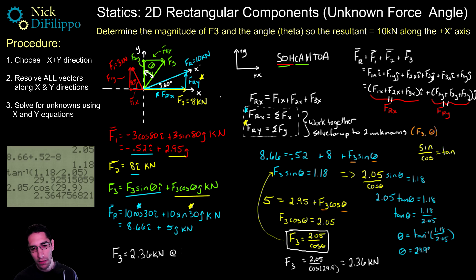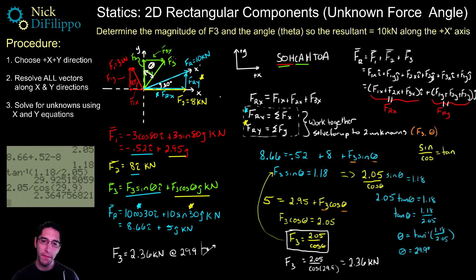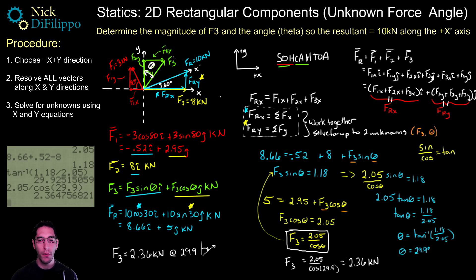So F3 = 2.36 kilonewtons at 29.9 degrees from the vertical direction — that's what theta represents and 2.36 kilonewtons is the magnitude. This is another type of problem you could be asked: rather than just determining the resultant, if you're given a resultant along a certain line, how do you figure out what one of your forces needs to be.